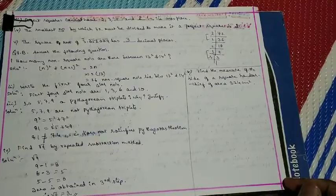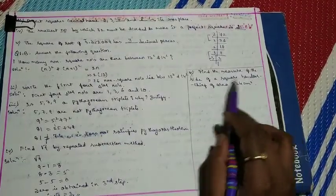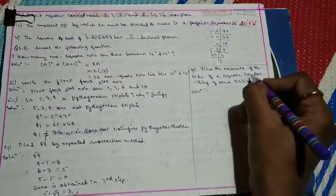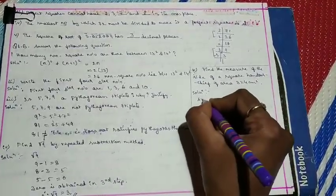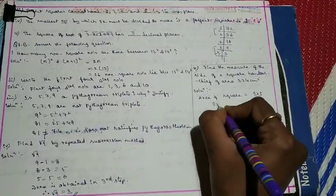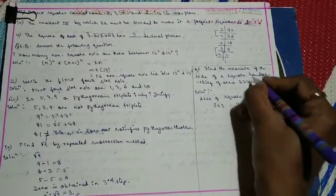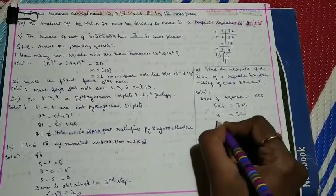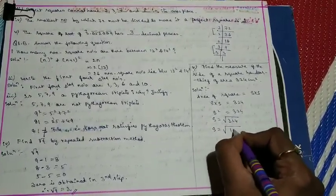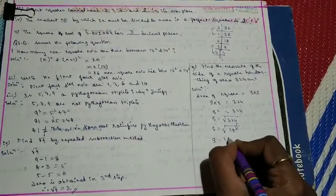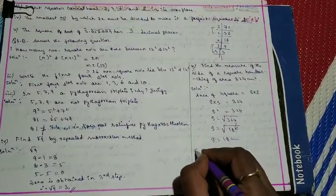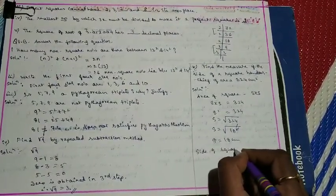Question 5: Find the measure of the side of a square handkerchief with area 324 cm². Area = side × side, so s² = 324, and s = √324. Since 324 = 18², the square root cancels and s = 18 cm. Therefore the side of the square handkerchief is 18 cm.